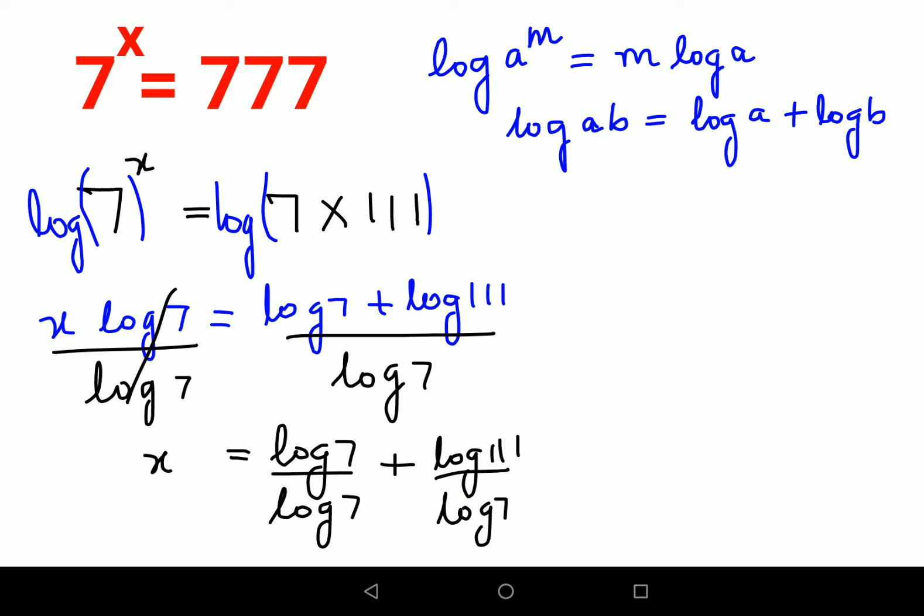Now why did I do that? See sometimes there are students who cancel this. No that's not all right. That's not possible when you have a plus sign in picture. You can only do that if the sign in your numerator is multiplication. So now you will see your value of x is coming to 1 plus log 111 upon log 7.